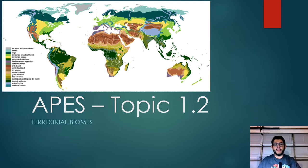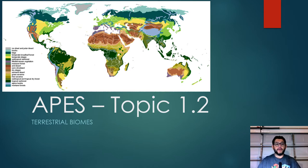Hi guys, it's Mr. V and this is episode 2 of topic of unit 1 for the APES review. Today's topic is about terrestrial biomes. A biome is a large swath of land that is characterized by a few things, which we're going to be talking about in this section.